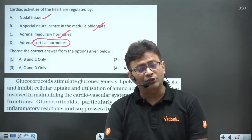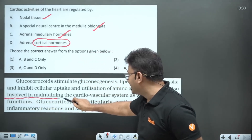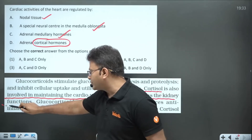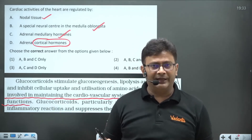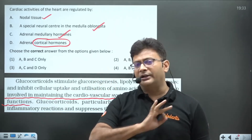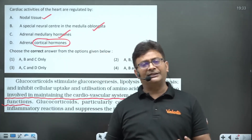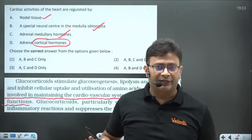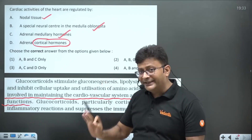The child argues that cortisol is part of cortical hormones and is also involved in maintaining the cardiovascular system and kidney function. However, conceptually, cortisol is never directly involved in heart function — it indirectly induces epinephrine and norepinephrine, so cardiovascular activity is regulated indirectly, not directly.